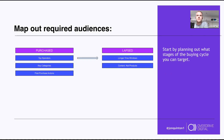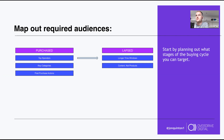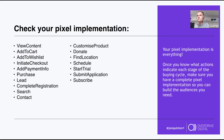You might also want to look at lapsed customers — people who haven't purchased in the last 12 or 6 months depending on your cycles. The strategy there might be different: not necessarily pushing the next sale, but getting them back via content. If you don't map it out, you don't know what audiences to build.